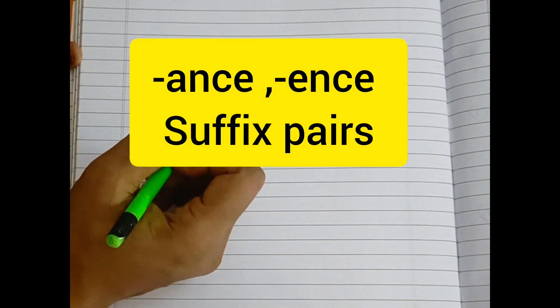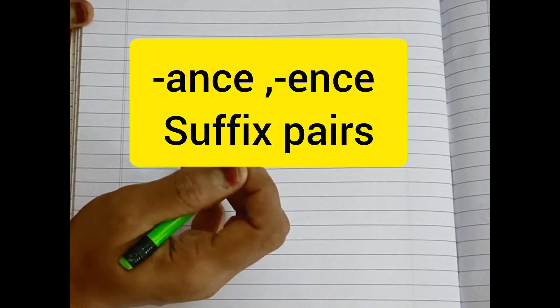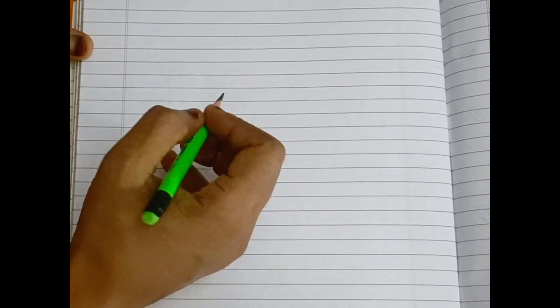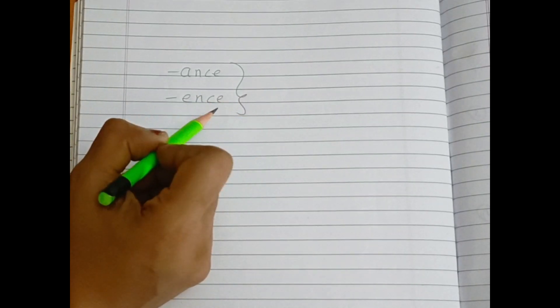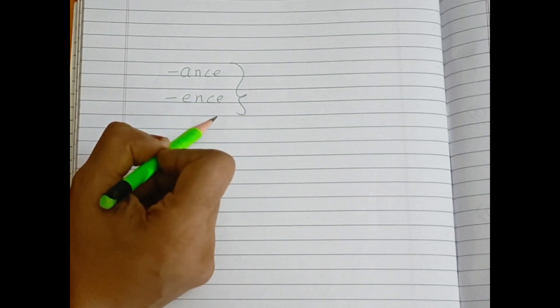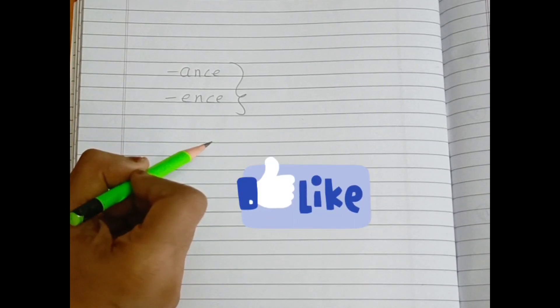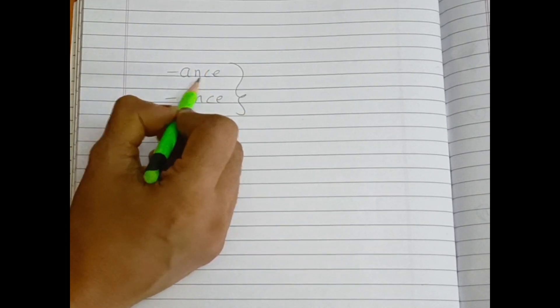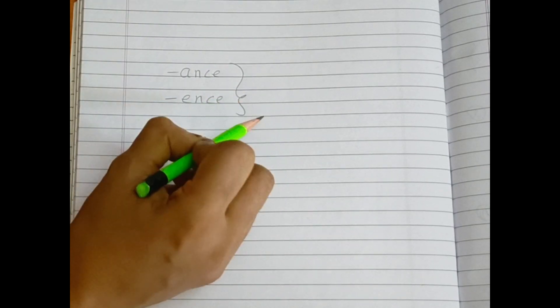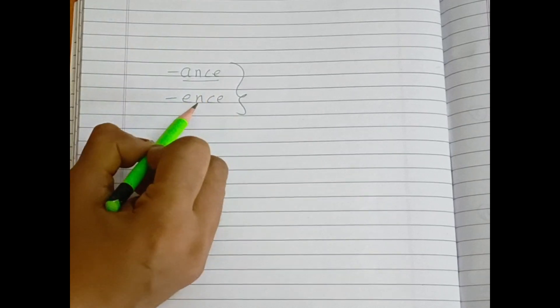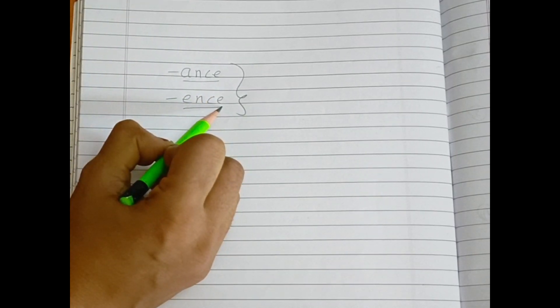Hi, today we shall learn the spelling rule for suffixes ending with a-n-c-e and ending with e-n-c-e. When do we use which one? These are the guidelines, and in most of the words you may find exceptions as well. So in today's video, we are going to learn in detail where to use a-n-c-e and where to use e-n-c-e.